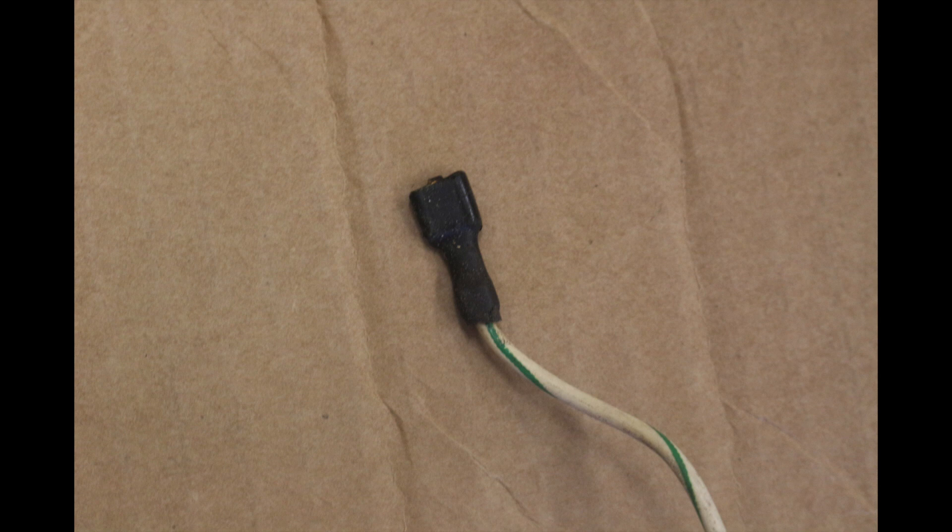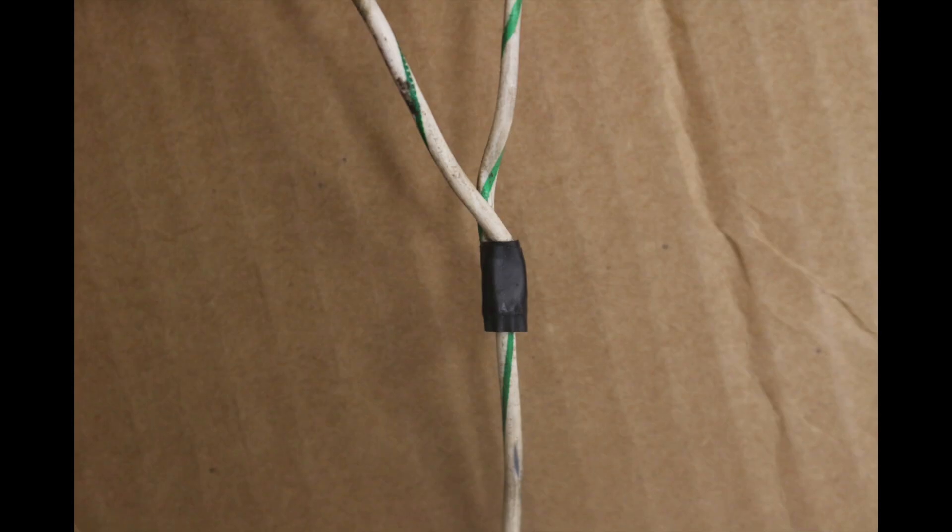And then uses a split, a butt connector, whatever you want to call it, inside the main trunk of the harness near the fuse panel. It's buried deep in there, and you'd never see it, but it basically takes that one wire from the relay and then splits it and serves the same purpose as the other car, but it's a difference.